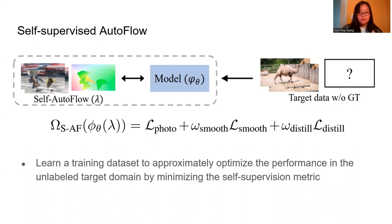Given an unlabeled target dataset, we learn a synthetic dataset that approximately optimizes performance in the target domain, where performance is measured by the self-supervised search metric.